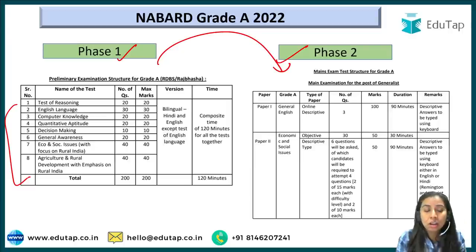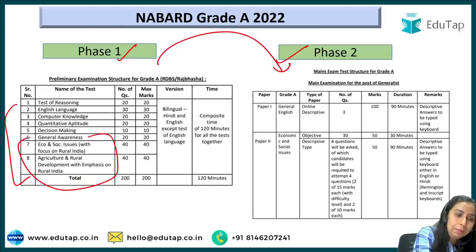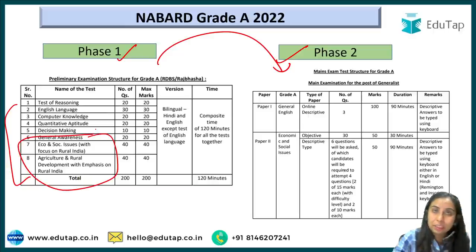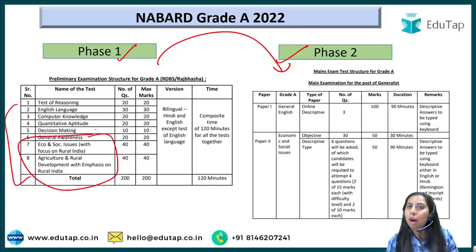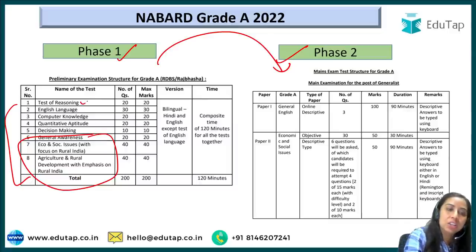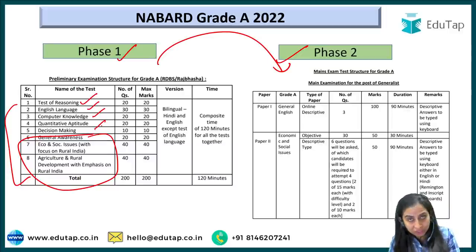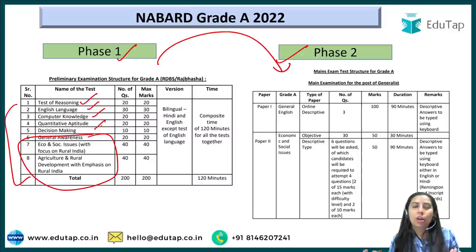In Phase 1, there are 8 subjects. Three of them are actually merit-based, meaning the final cut-off will be from 100 marks. But that does not mean you can ignore other subjects, because sectional cut-off is still there. So you will keep your paper in 200 marks — 200 questions and a time of 120 minutes.